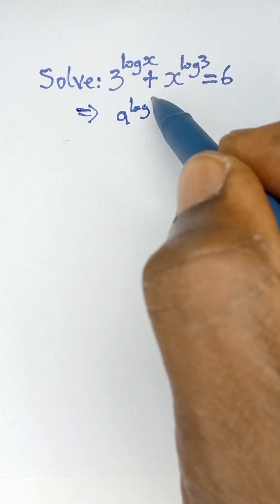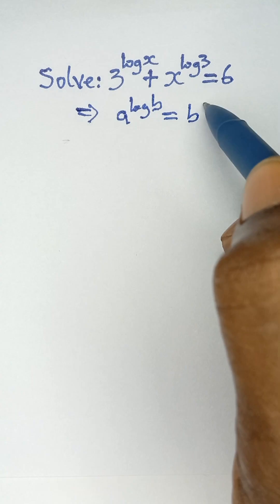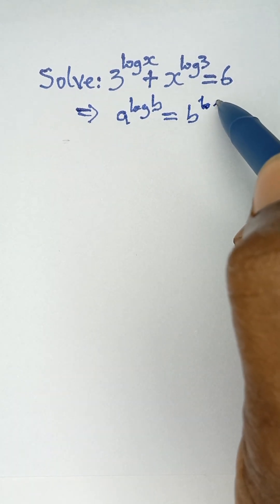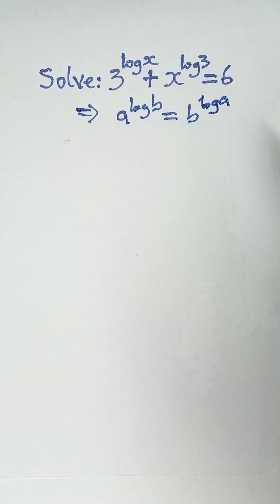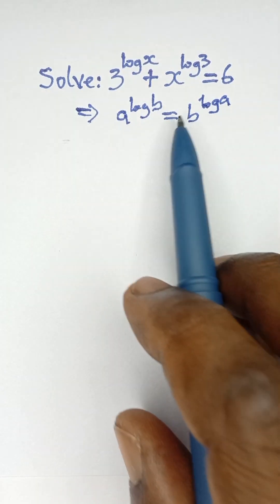a to the power log b is equal to b raised to the power log a. So if you have a raised to the power log b, it can also be expressed as b raised to the power log a.